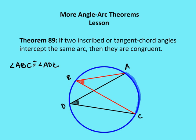Theorem 89 — and again, if you're following along with some other book other than the one we're using in our class, it doesn't really matter what number it is. Theorem 89: if two inscribed or tangent chord angles intercept the same arc, then they are congruent. This theorem makes sense. If the measure of arc AC is 90 degrees, then the measure of inscribed angle ABC is 45 degrees and the measure of inscribed angle ADC is also 45 degrees. We've already proven that the measure of an inscribed angle is half the measure of its intercepted arc, and we just apply that prior theorem here.